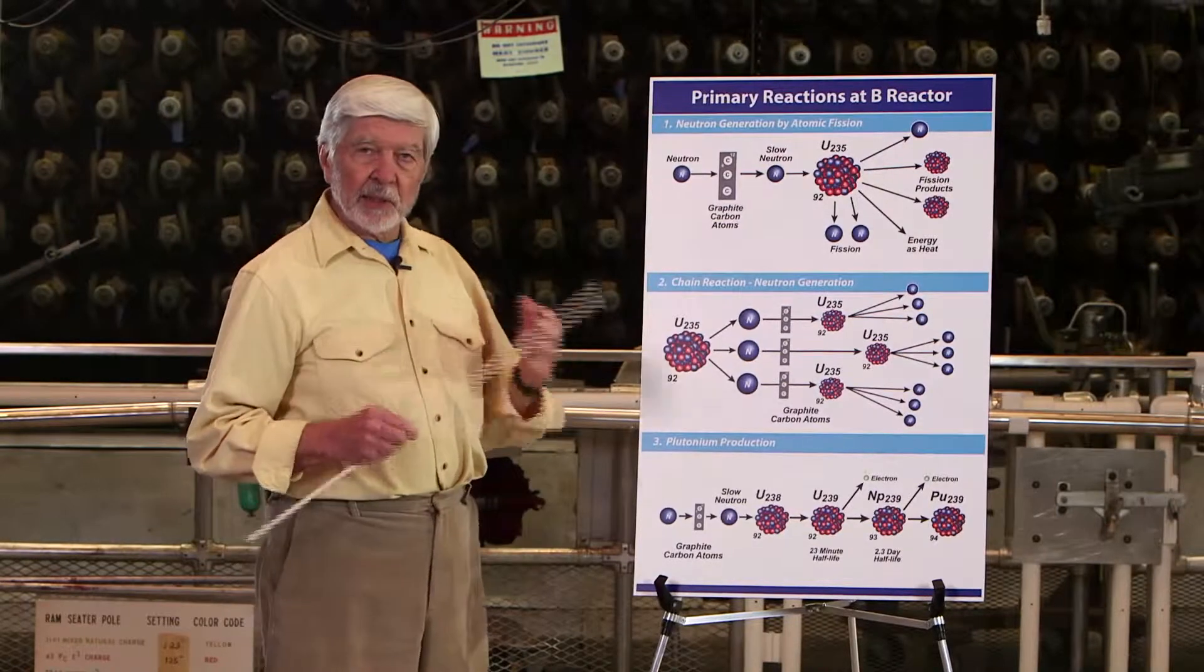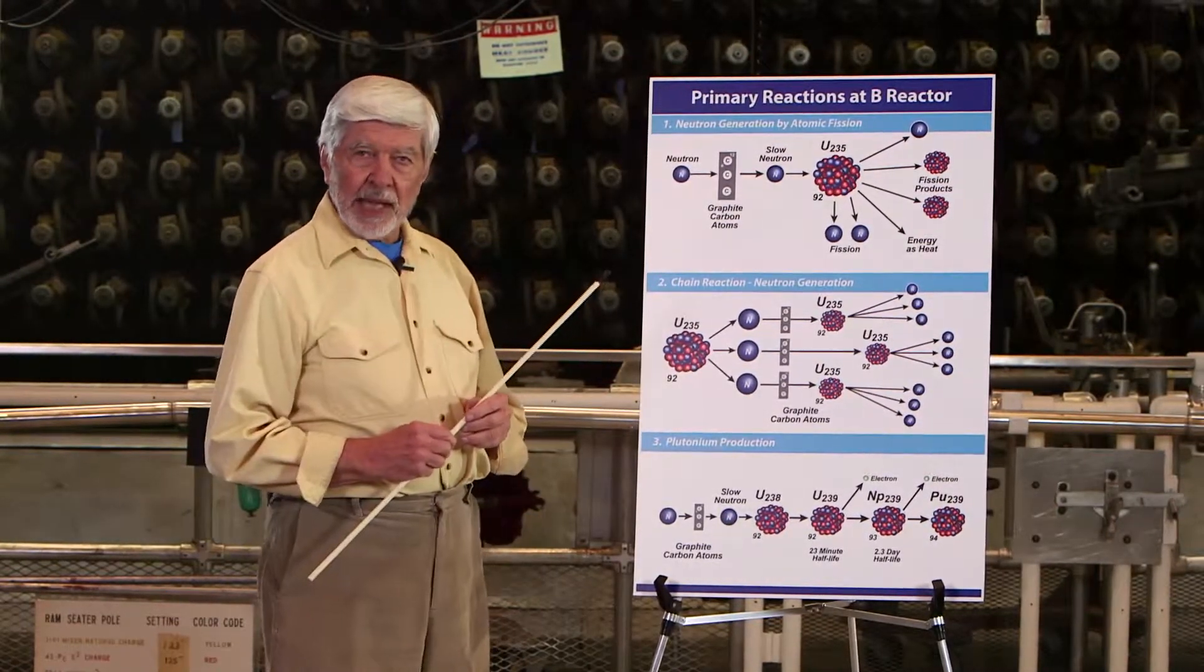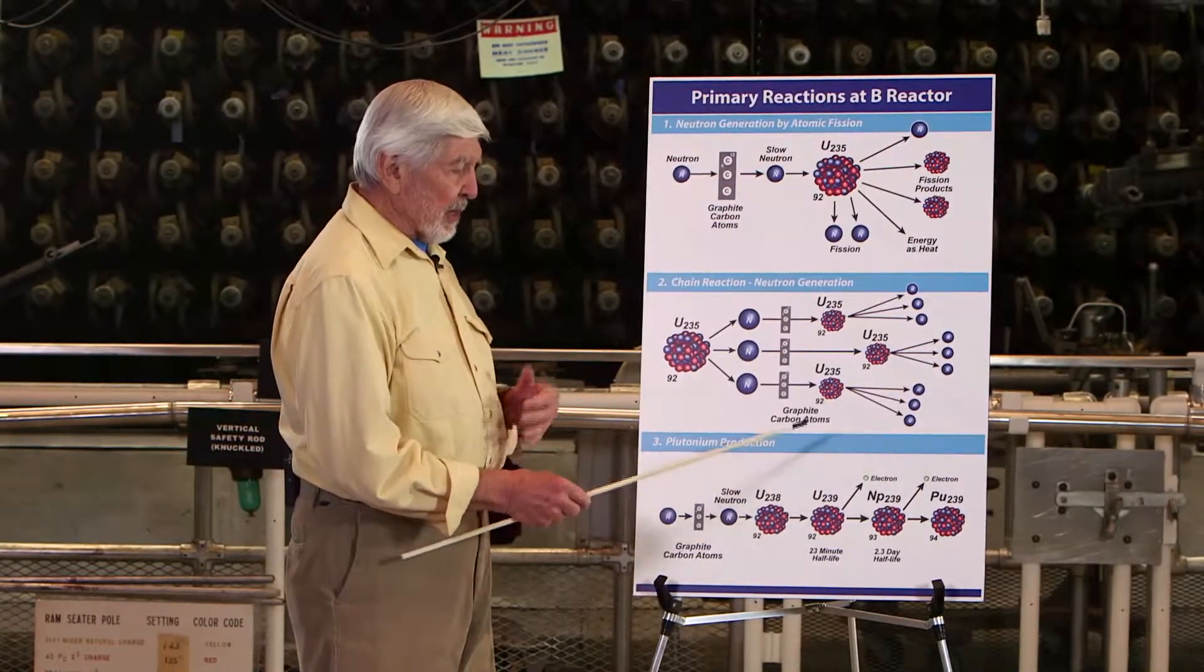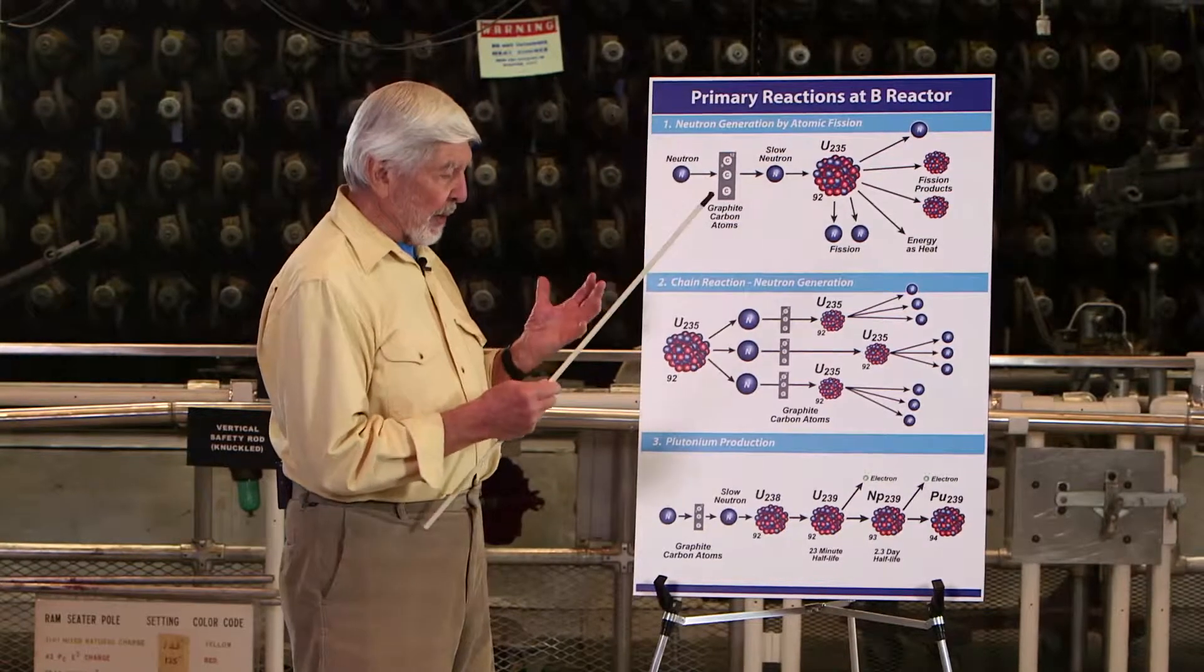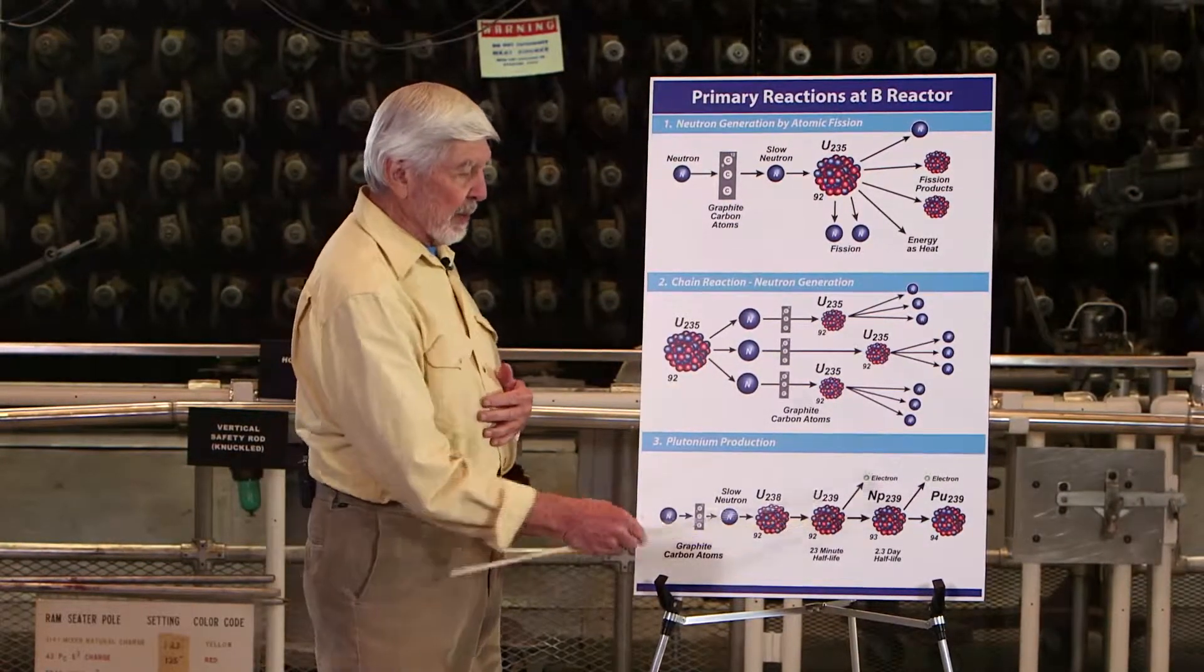These reactions don't occur immediately. Physicists have a term called half-life. The uranium-239, for example, changes over a period of 23 minutes. Half of it changes into neptunium.